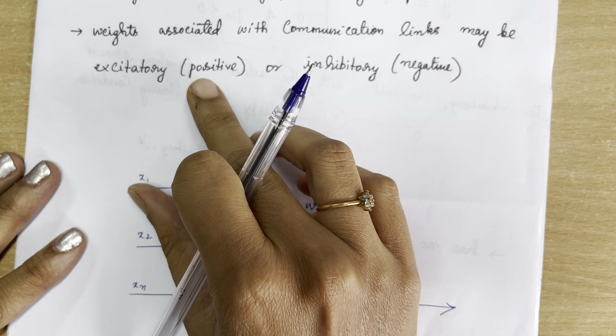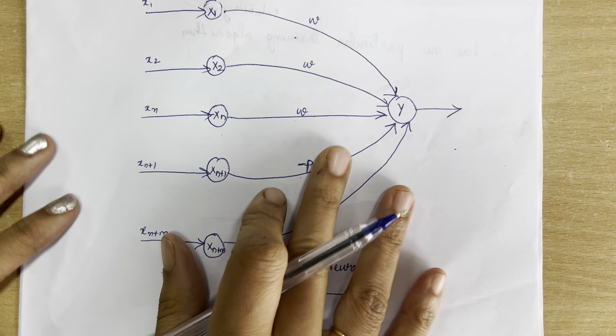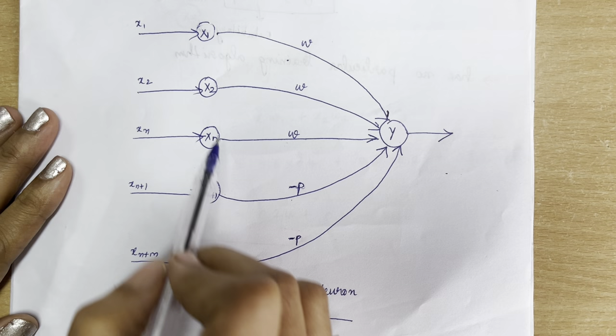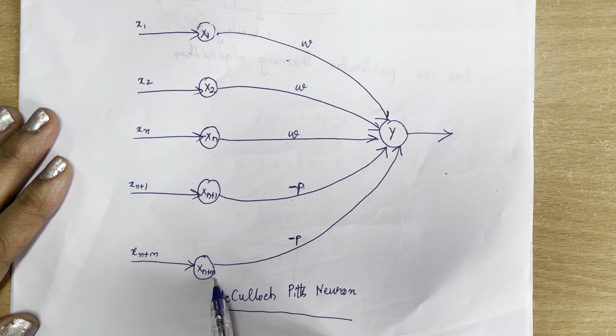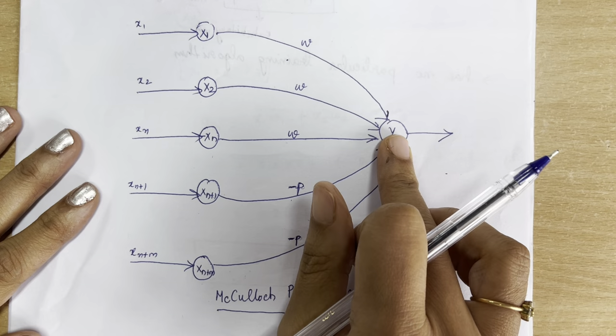The weights associated with the communication links may be positive or negative — that means excitatory or inhibitory. We will now see the architecture of this McCulloch-Pitts neuron. The input nodes are x1, x2, xn, xn+1, and xn+m.